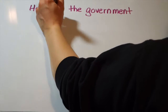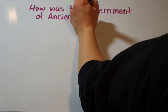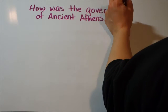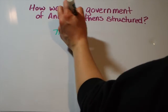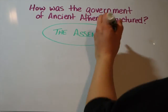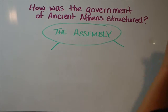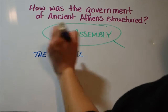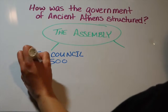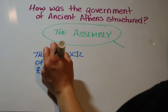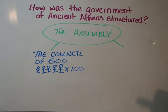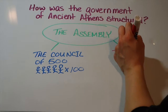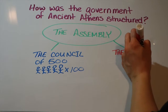Here we're going to be talking about how the government of ancient Athens was structured. The first thing we have is the assembly — that's the big, huge group. From that assembly we get the Council of 500, which does sound like a huge action movie — five people times 100, 500. And we also get the court.